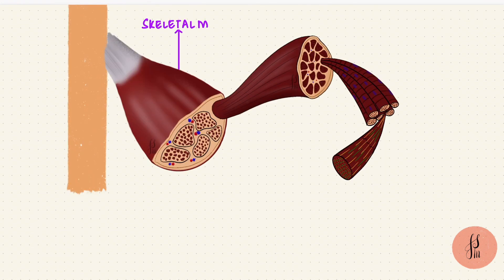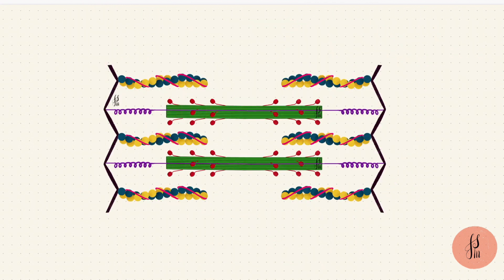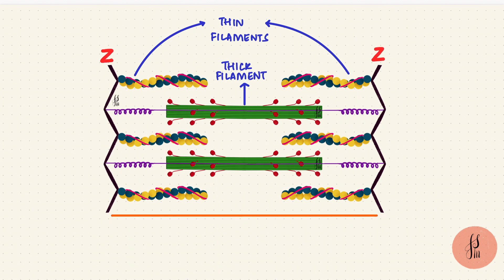So the skeletal muscles are made up of fascicles, which are bundles of muscle fibers. The muscle fibers are basically muscle cells, and they have myofibrils. These myofibrils are made up of myofilaments. The myofilaments are thick and thin filaments which interdigitate. The thin filaments attach to the Z discs, and the structure between two Z discs is called a sarcomere.